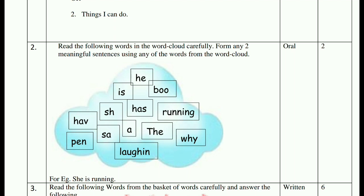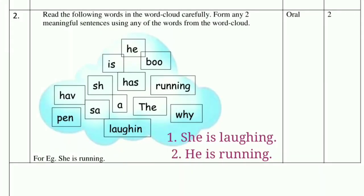The words given are: he, is, boo, have, sh, has, running, pen, sa, a, the, why, laughing. Now what sentences can we make? She is laughing. He is running. Third, you can also make: He has a pain. In this way, you can prepare sentences based on your ideas and tell your teacher orally.